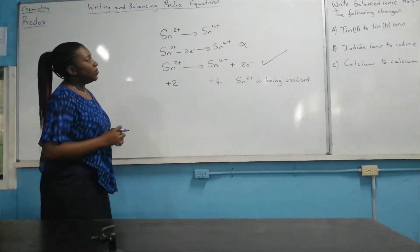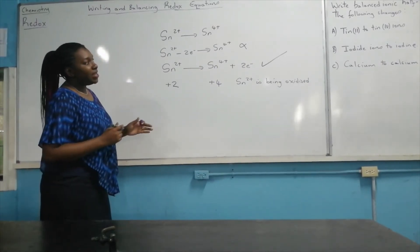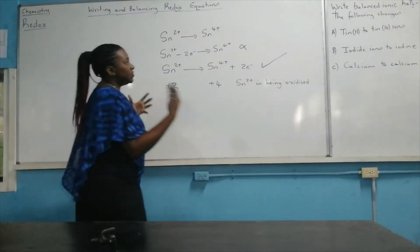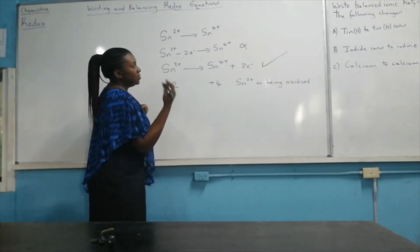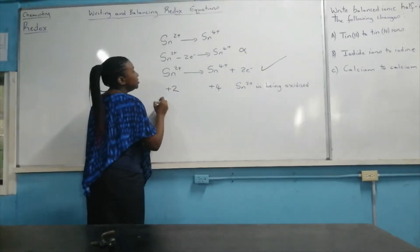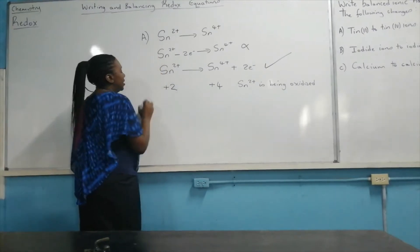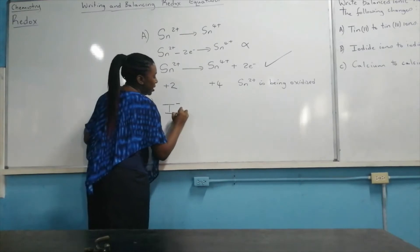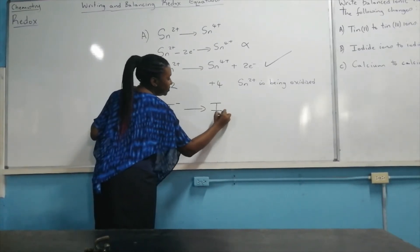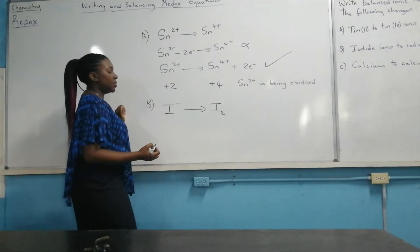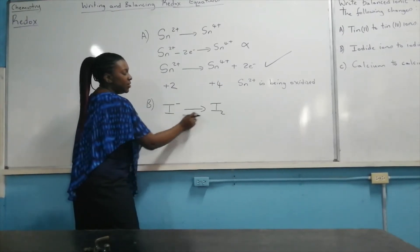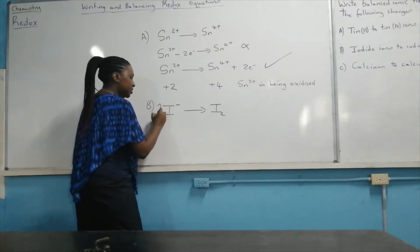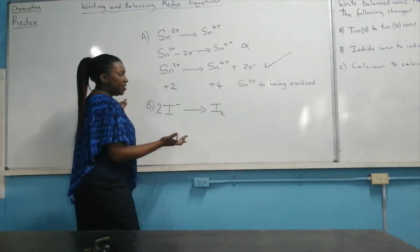Now we're going to look at B — the conversion of iodide ions to iodine. We have iodide ions being changed to iodine. How is it that I have two atoms on one side and just one atom on the other? I need to balance these, so I need to have two iodide ions converted to iodine.